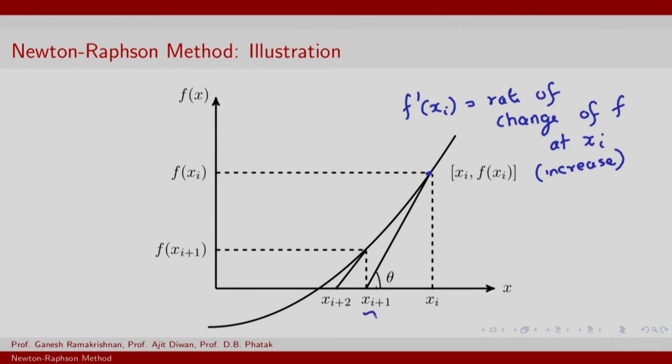This x-intercept is what we find to be our next x approximation. x_{i+1} is the next x-intercept based on f'(x_i).